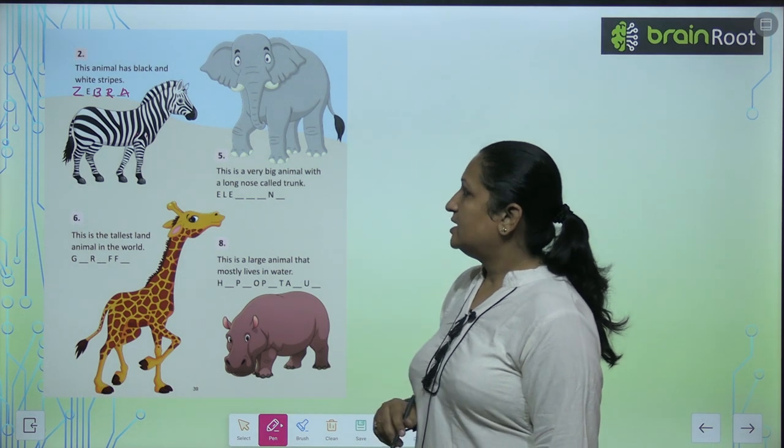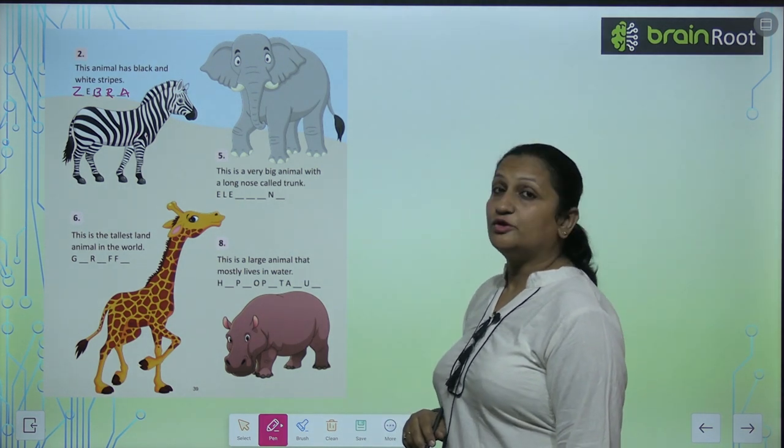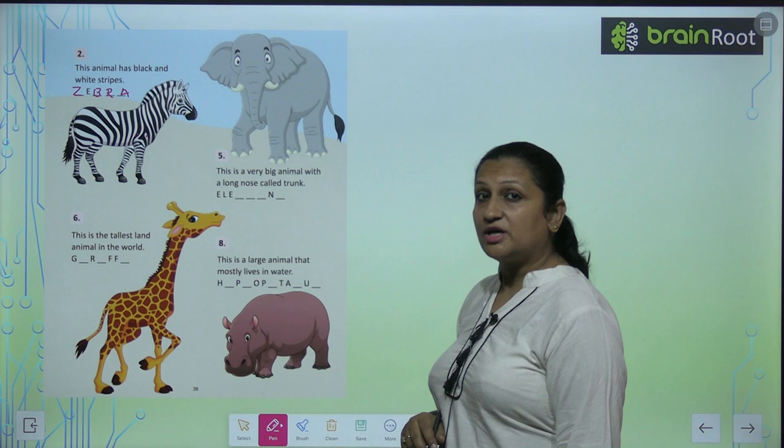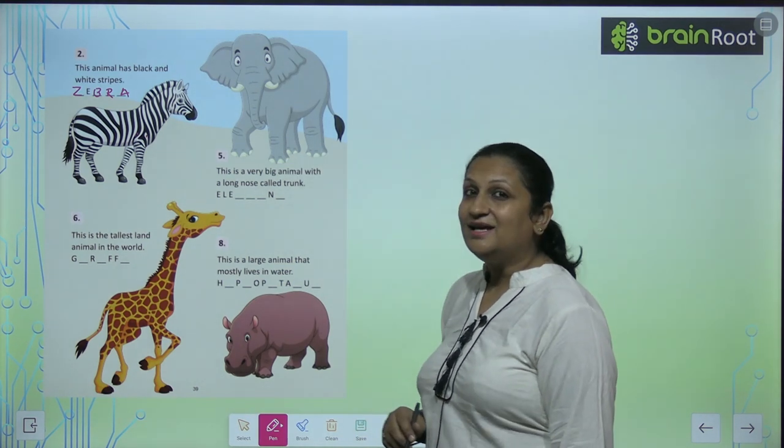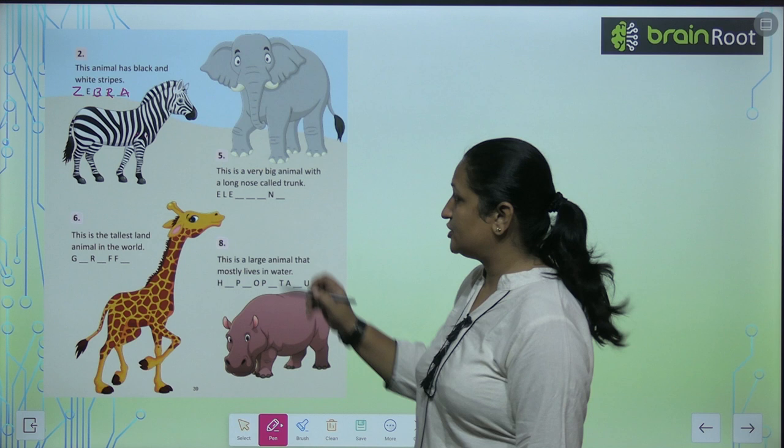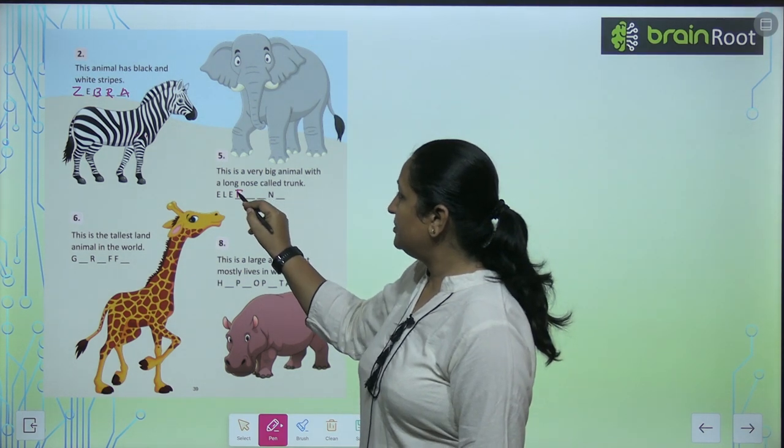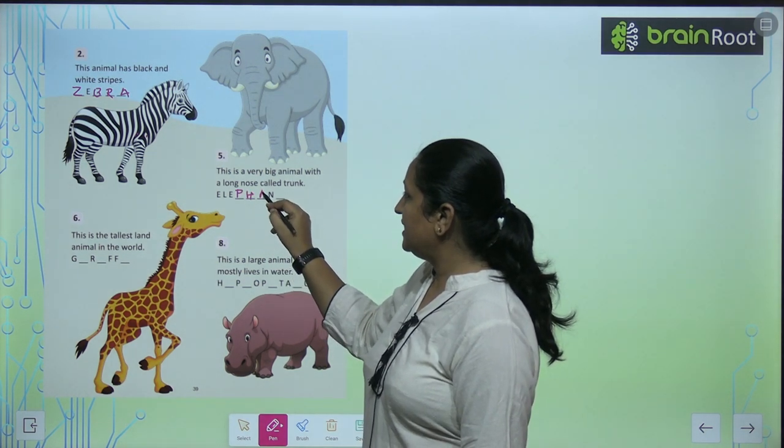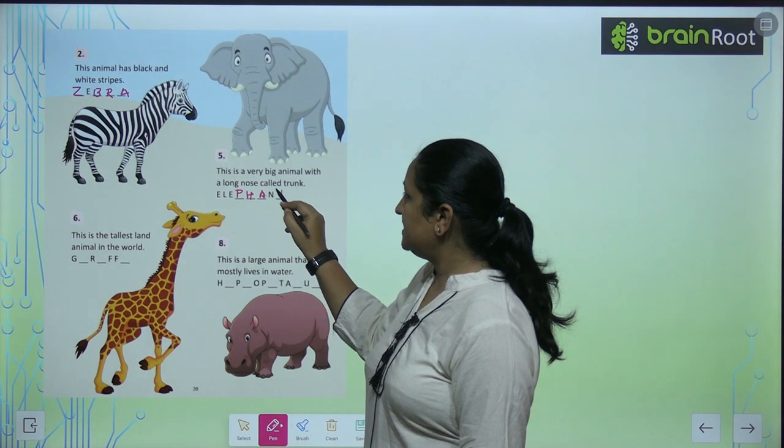Now see the fifth one. This is a very big animal with a long nose called a trunk. Which animal is this? Everyone knows this. This is an elephant. So you will have E-L-E-P-H-A-N-T. Elephant.